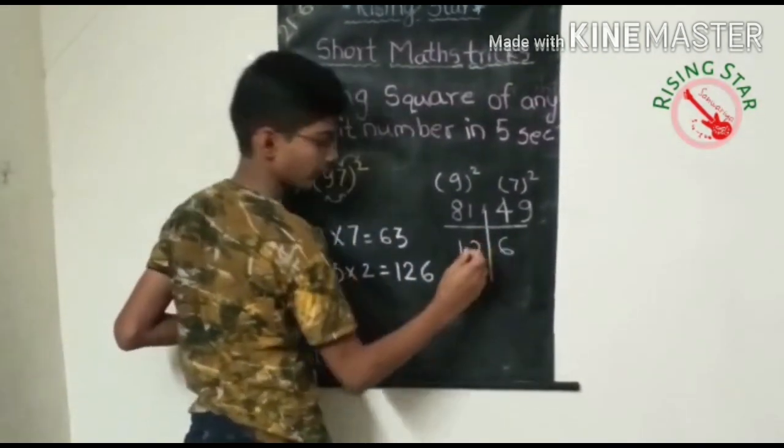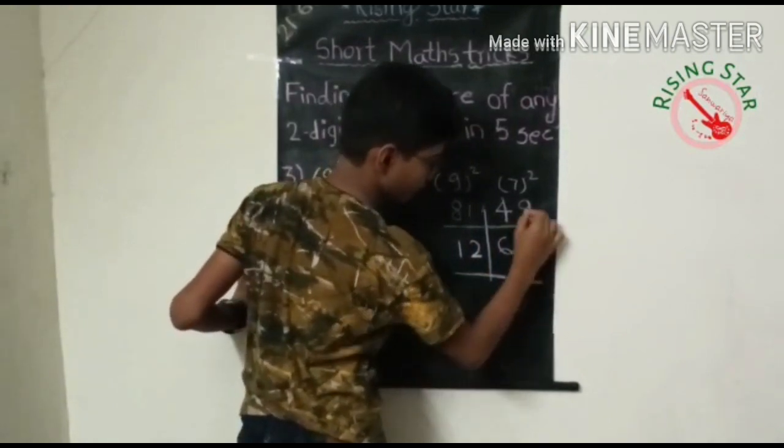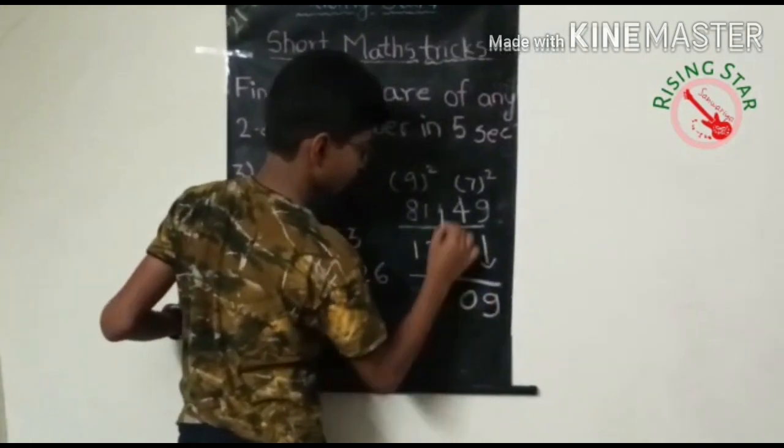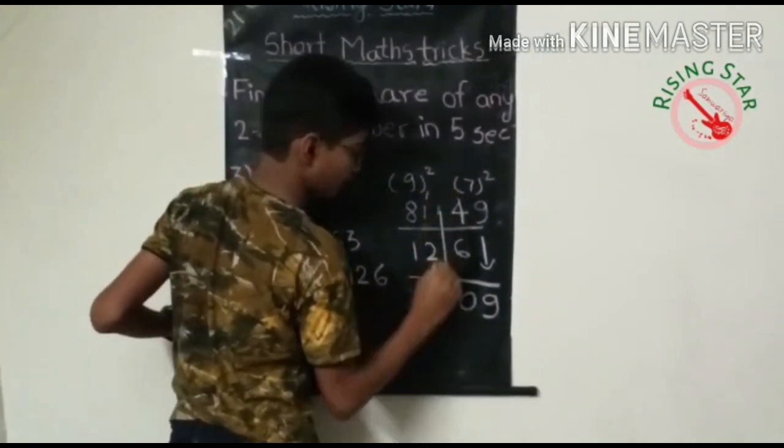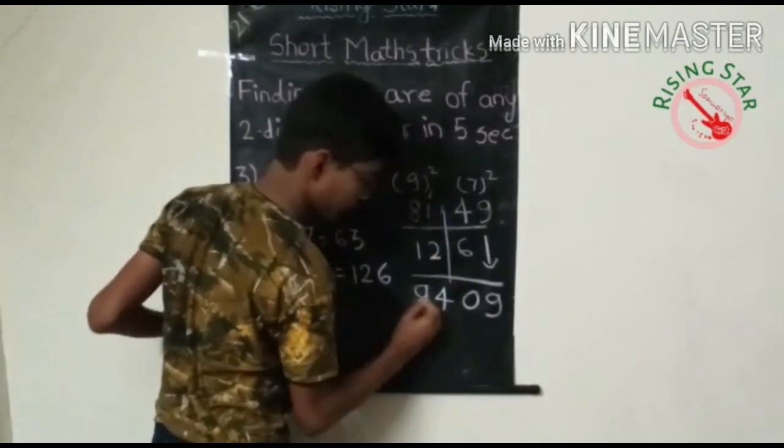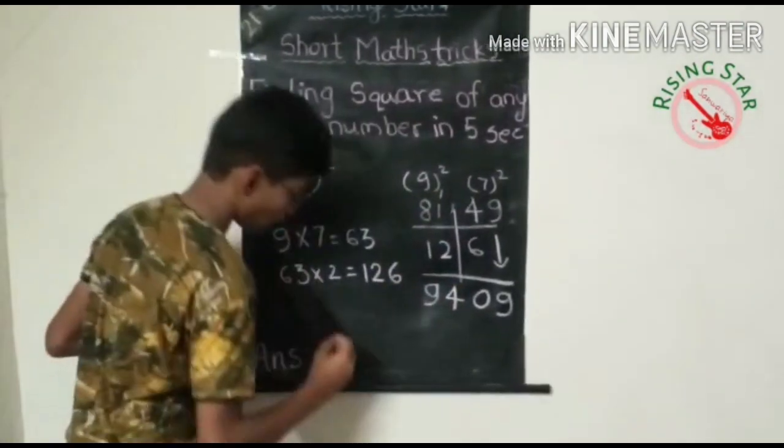And now just add nine. Here ten with one carry, here four, and here nine.